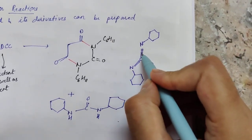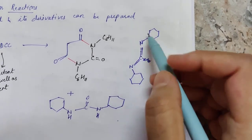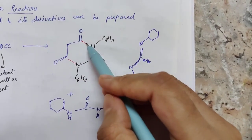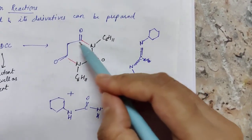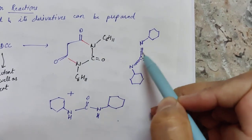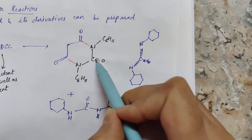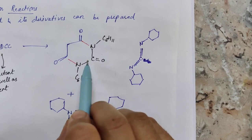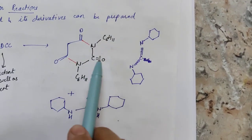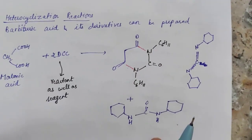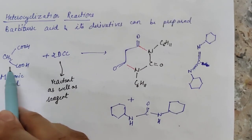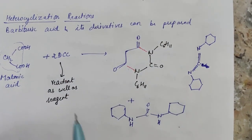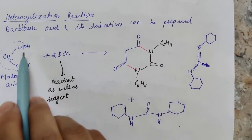What happens is that the pi bonds in DCC are cleaved and two new sigma bonds are formed to create a hexacyclic ring. Since both pi bonds of the central carbon are broken, that carbon must complete its valency, so it takes up an oxygen atom and forms a carbonyl group. The oxygen comes from the malonic acid — specifically the two hydroxy groups are released.